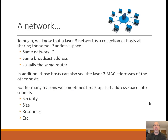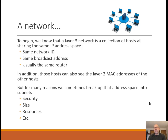Let's get our definition of a network straightened out. A network is really a layer three construct, and when we think of a network, we think of all the hosts on that network having the same IP address. When you're on a network, you also have the same broadcast address and the same network ID. For example, 192.168.1.0 and 1.255 would be the network ID and broadcast. Usually you have the same router. One important thing is that all hosts on the network can see each other's MAC addresses, so you can ARP for them and build frames directly to them.